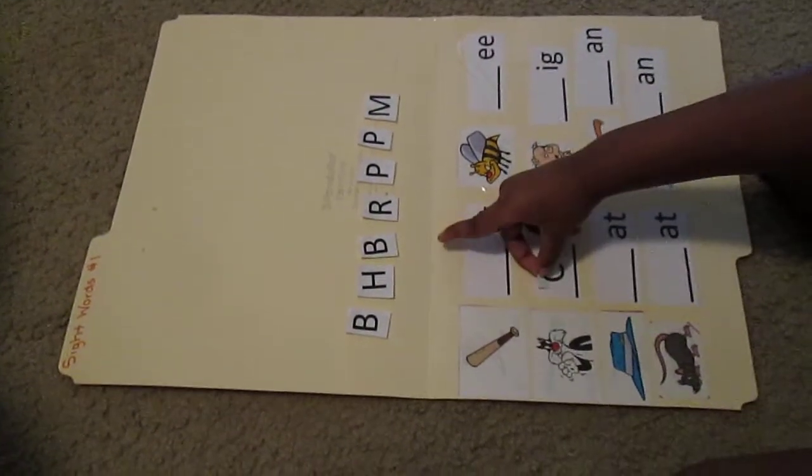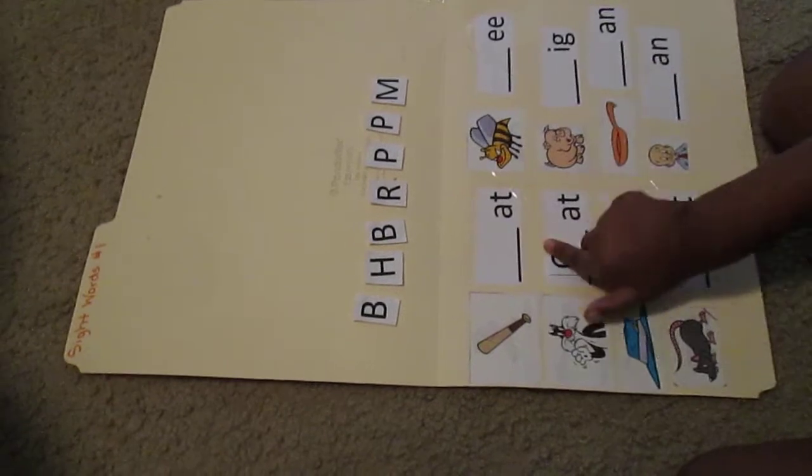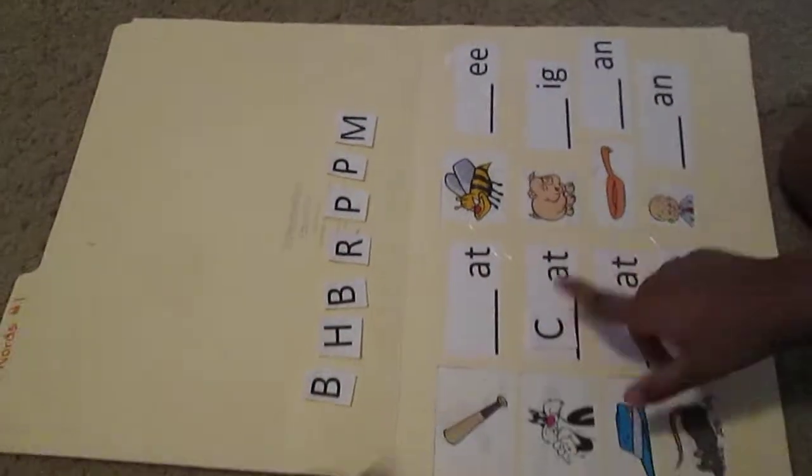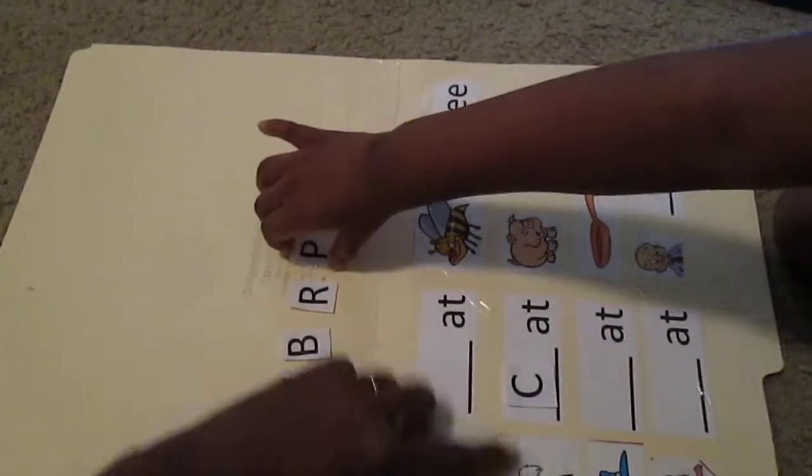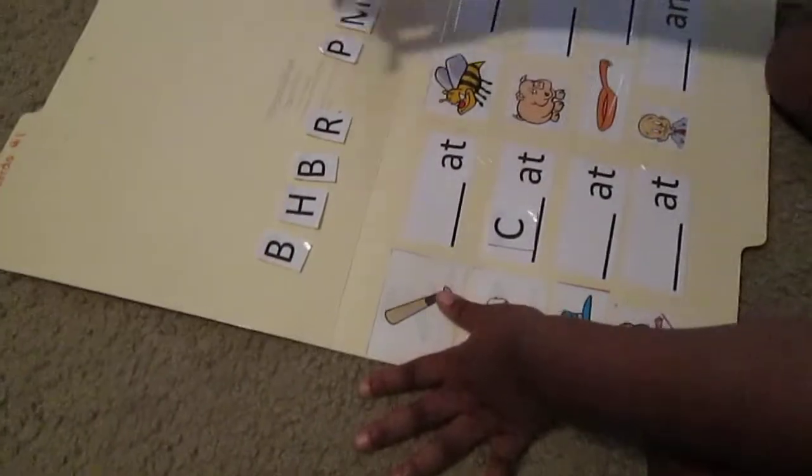And what's that word? C. And what's the whole word? C. C. A. T. Spells. Cat. Cat. Good job.